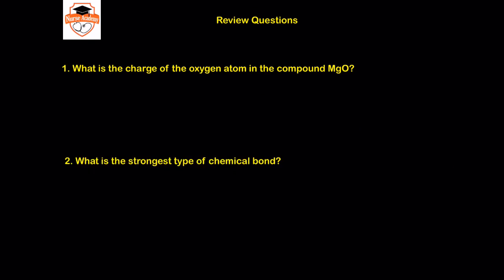For question two — what is the strongest type of chemical bond? — the strongest type of chemical bond discussed here is a covalent bond. The sharing type of bond is the strongest type of chemical bonding discussed.